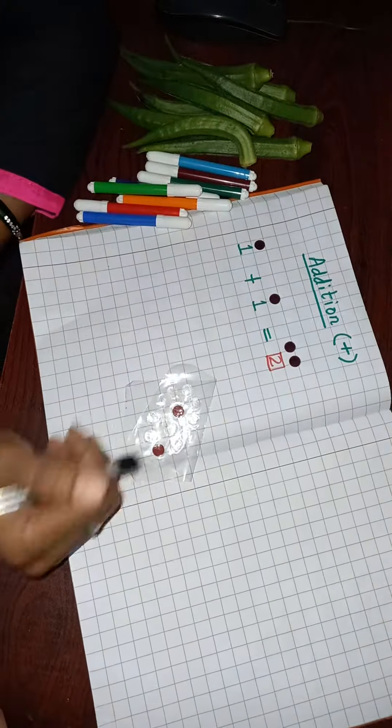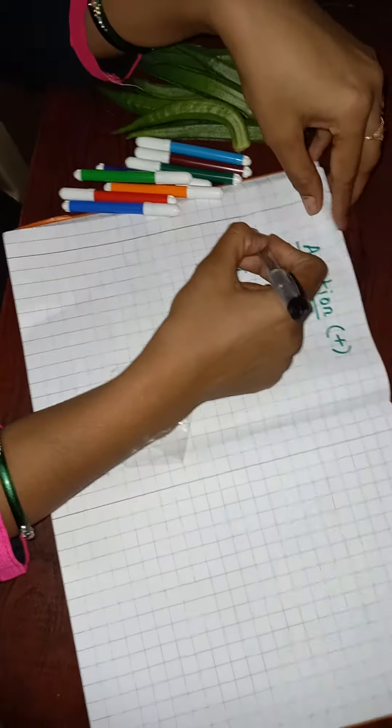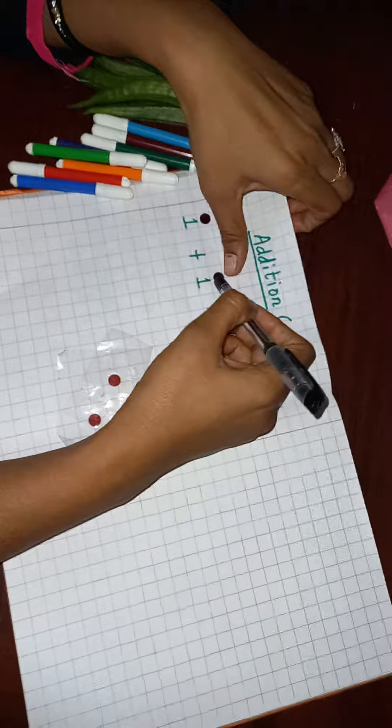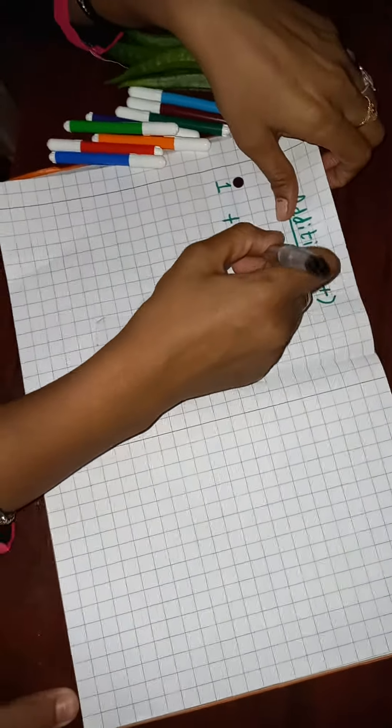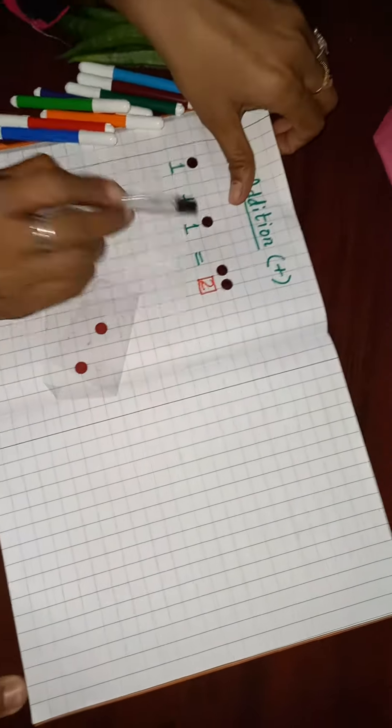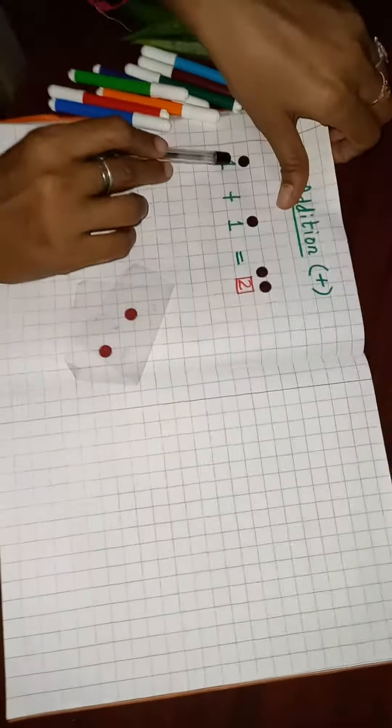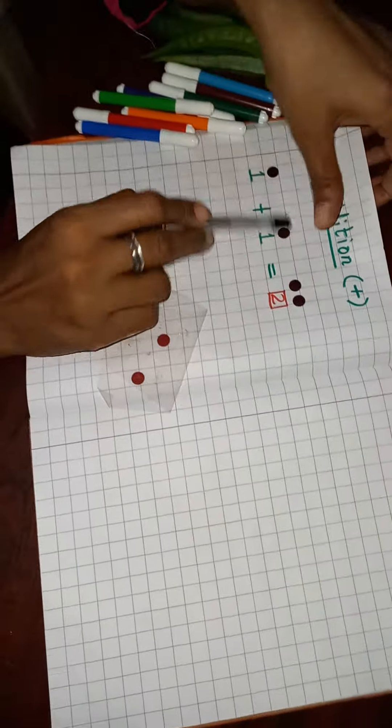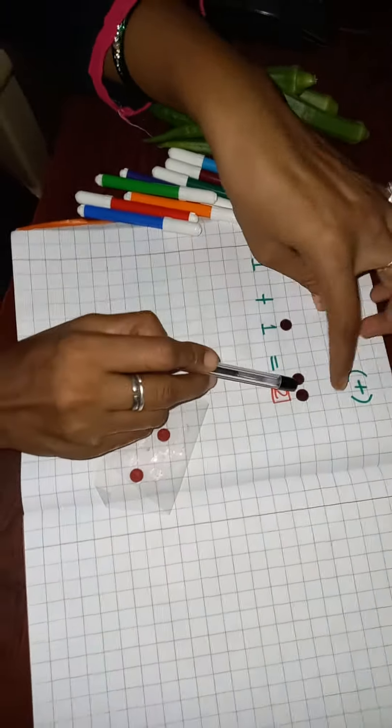We have one bindi and we have got one another bindi. So combine and count it. We have a total of two bindis: one and two.